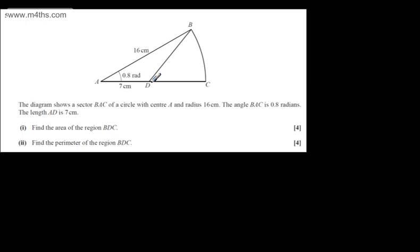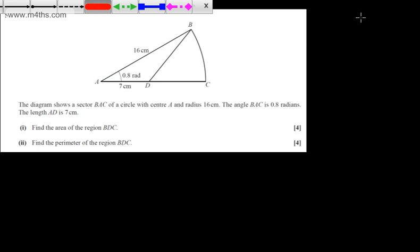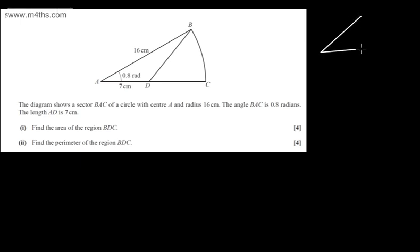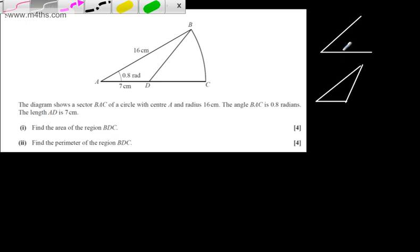So here's B, here's D, here's C — we want this area. I'm going to find the area of the sector BAC and subtract from it the area of the triangle BAD. Just drawing a quick sketch, we can put the information on and go ahead and find these values. So we have the triangle BAD and the sector BAC.